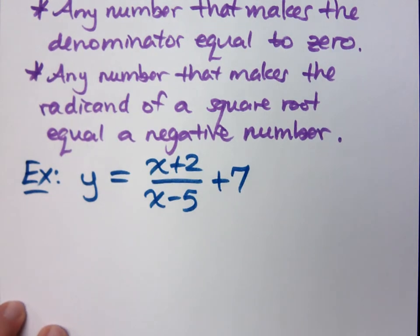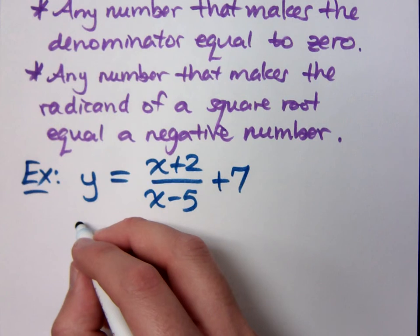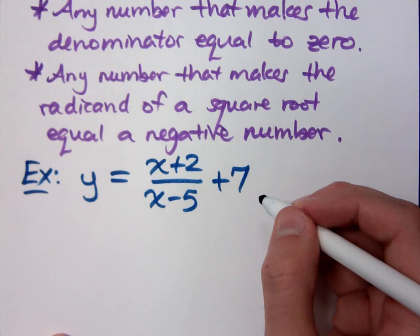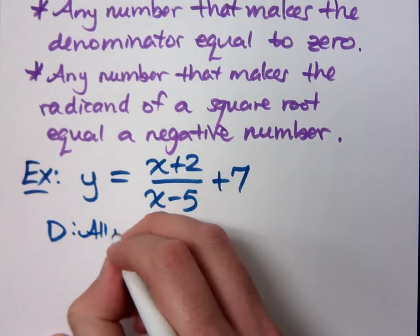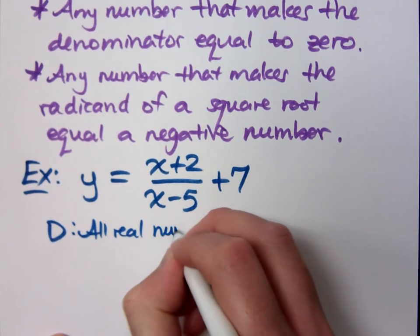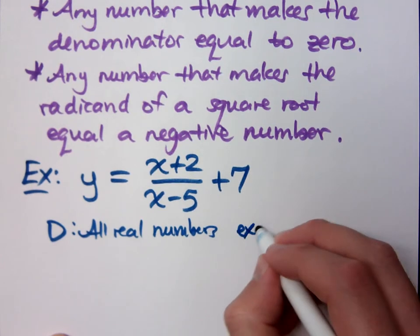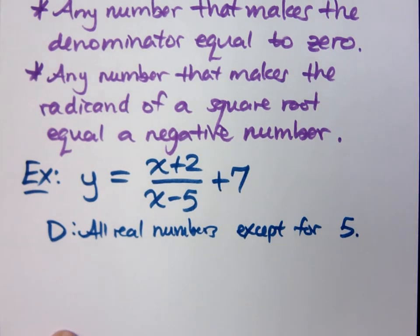They could say, what is the domain? What are the acceptable values of x that I can plug into this? Well, is our domain going to be all real numbers? No, because what's the bad guy here? What would make my denominator zero? Five, right? So my domain will be all real numbers except for five.